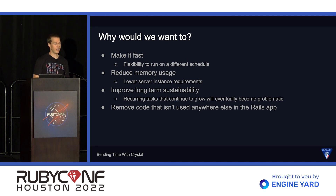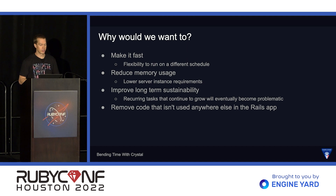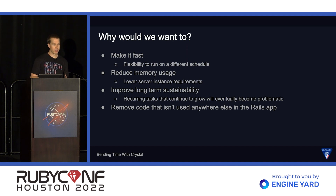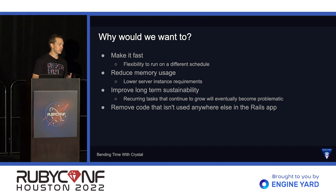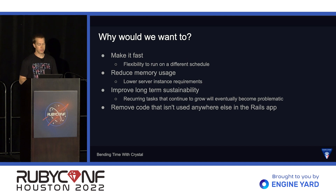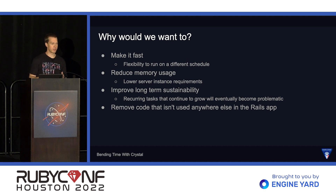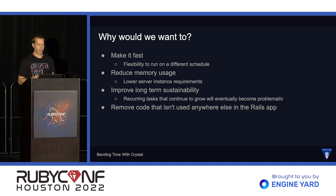We tend to launch product in the morning and afternoon, and we could just run it immediately following that. We can also reduce memory usage, which would allow us to lower the requirements for our server infrastructure and help with overall system flexibility. There are also intangible benefits: the biggest one is that we can improve long-term sustainability. Recurring tasks that will continue to grow over time will eventually become problematic. As our business grows, this task will grow also — so do we deal with this now when it's manageable, or when it becomes an emergency? And lastly, if we can remove code that isn't used anywhere, that's going to help with maintainability of our Rails app itself.